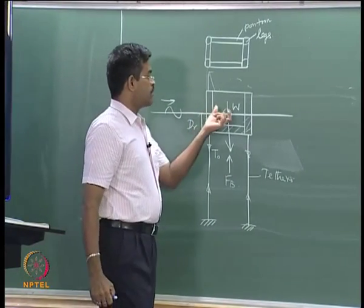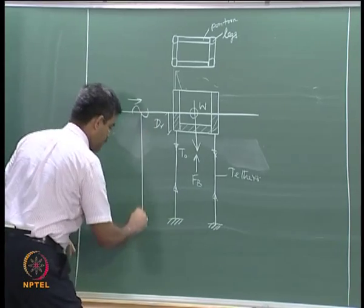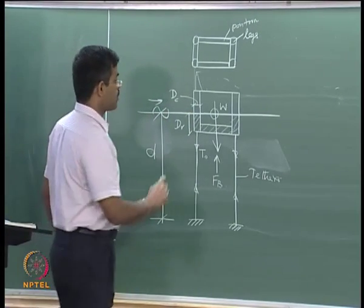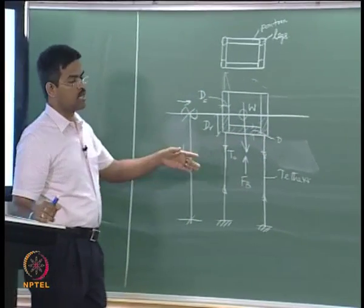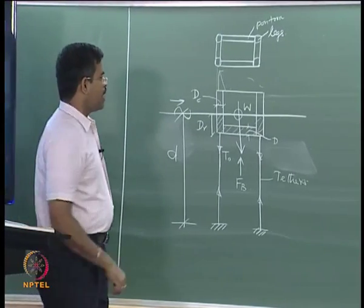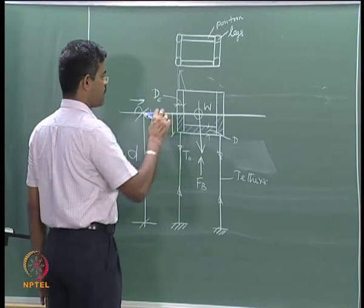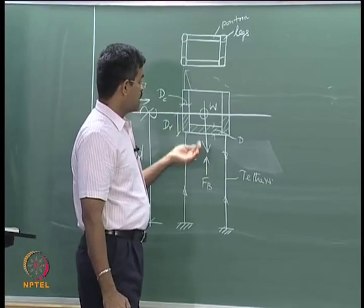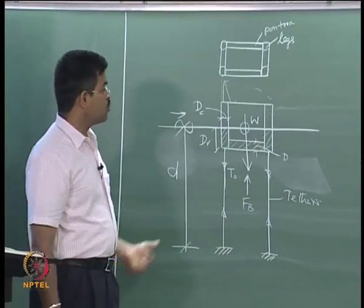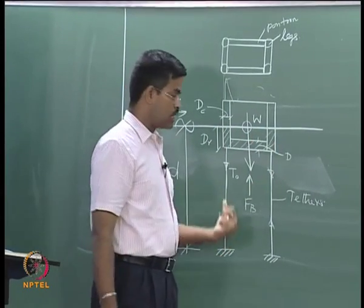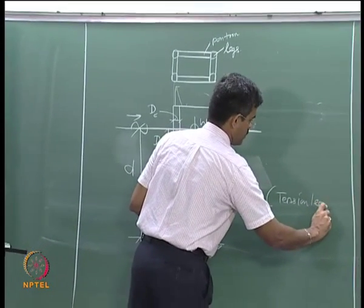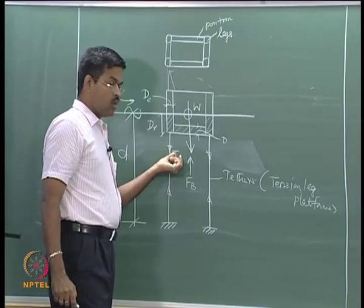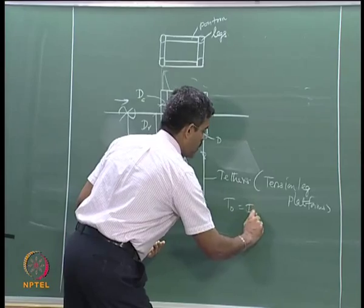Since the buoyancy force greatly exceeds the weight, the tendency is always for the platform to be pushed up when installed. To keep it held down, I need tethers — the legs which hold it down. That is why they are called tension legs; they will always be in tension. The tension imposed on the tether to hold it in position is T₀, what we call initial pretension. The total T₀ for the whole platform will be 4T₀ since there are four legs.